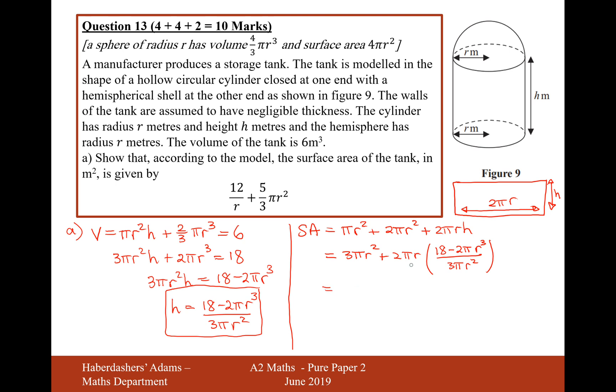Now, we need to somehow simplify this a little bit. If we cancel out an r from the top and bottom there and cancel out pi from the top and bottom there, then we're going to get 3 pi r squared plus, times the 2 inside the bracket, just on the numerator, 36 minus 4 pi r cubed. That's correct. And then that will all be over 3.